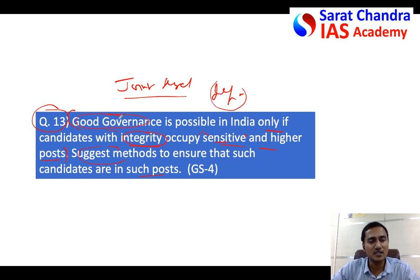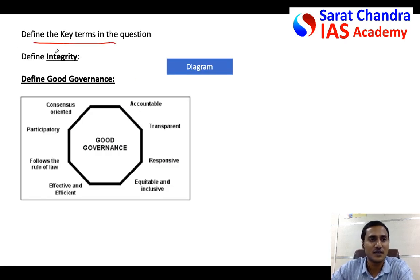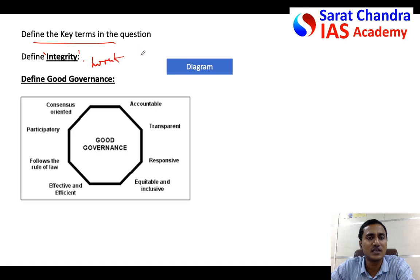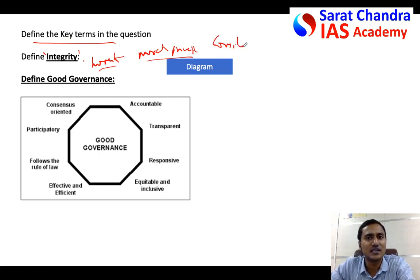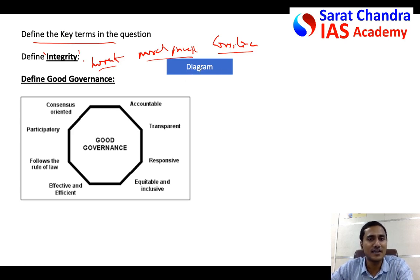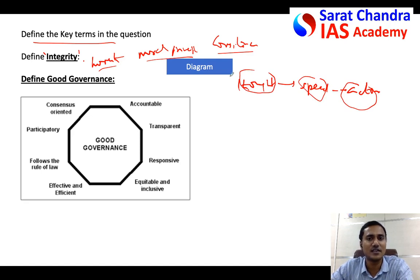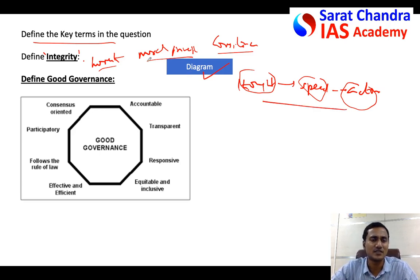In this kind of question, you have to define the keywords — integrity is one keyword, good governance is another. Define the keywords and then go on with the remaining part of the answer. For integrity, you can write in your own way: in the dictionary, integrity is the quality of having complete honesty and adhering to strong moral principles. You can also say that integrity means consistency — following the same moral principles in any situation, any day, without changing your principles. You can draw a diagram showing consistency across thoughts, speech, and action — this breaks the monotony for evaluators.